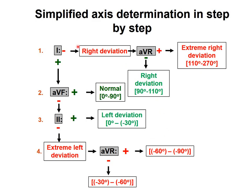As a summary: lead number 1 tells us whether we are on the right or left side. If lead 1 is negative, look at AVR — we can immediately diagnose extreme right deviation. If lead 1 is positive, look at AVF. If both are positive, we have a normal axis. If AVF is negative, look at lead number 2. If lead 2 is positive, we have only left deviation. If lead 2 is negative, we have extreme left deviation. By checking AVR, we can determine whether that is ranging from minus 60 to minus 90, or minus 30 to minus 60.